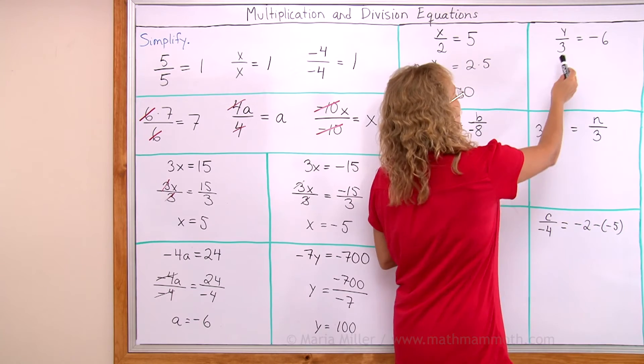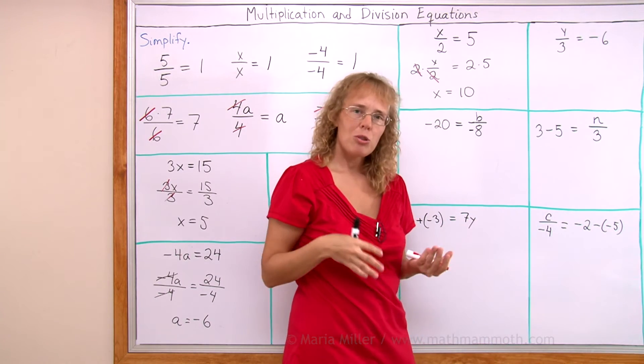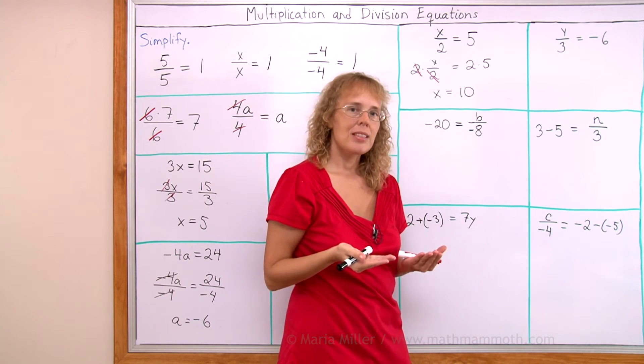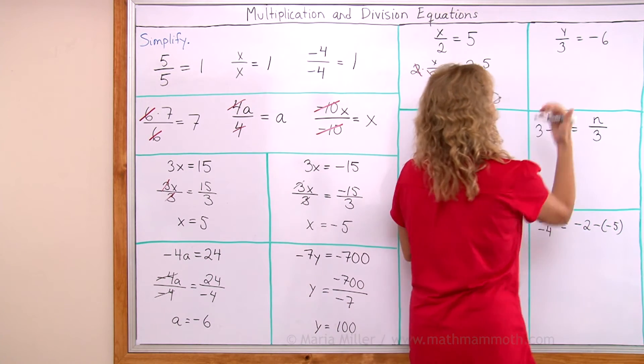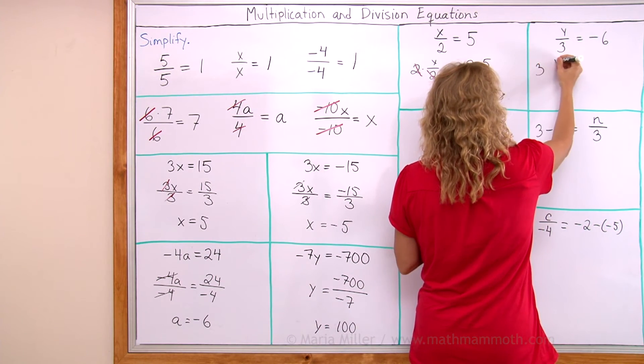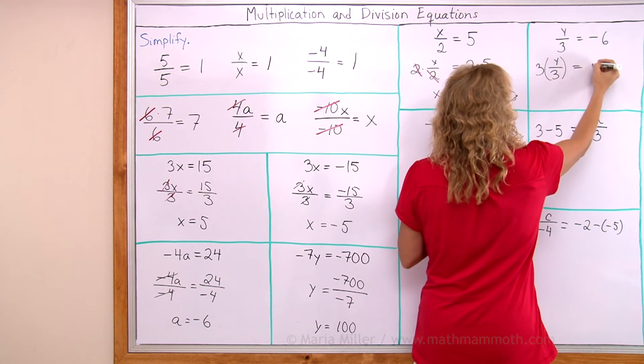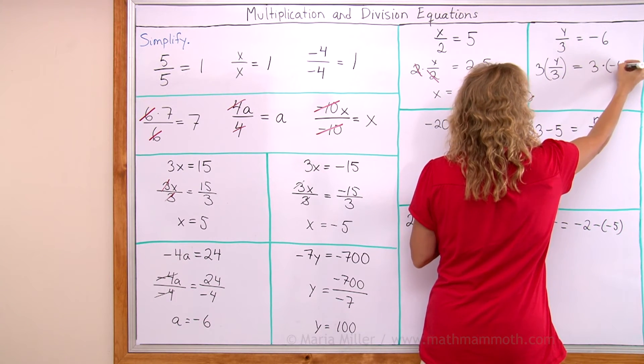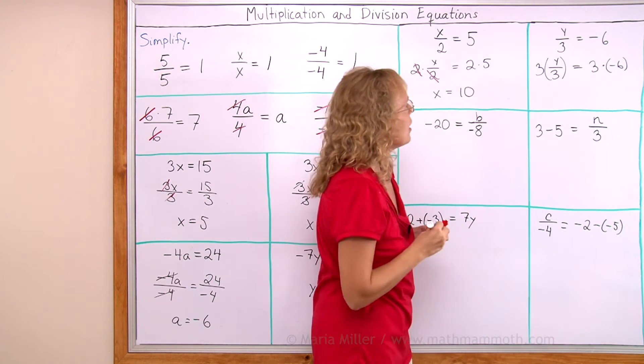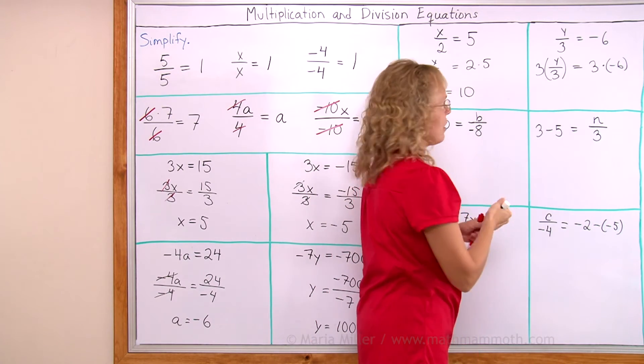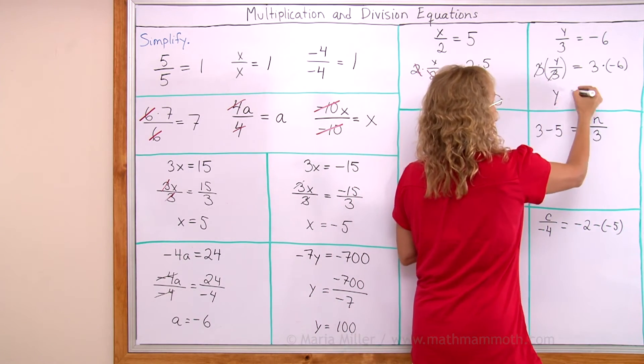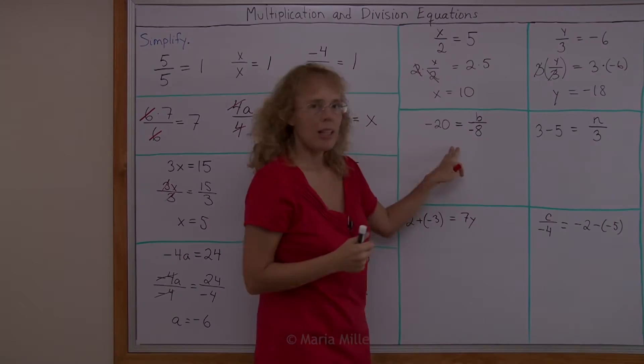Over here, y is divided by 3. So what do we do to both sides of the equation? Right! We multiply both sides by 3. Okay, you can write it as 3 times y over 3. Some people use parentheses there. Equals 3 times this here. Negative 6. Now, here 3s cancel. We get y alone. And here we get negative 18.